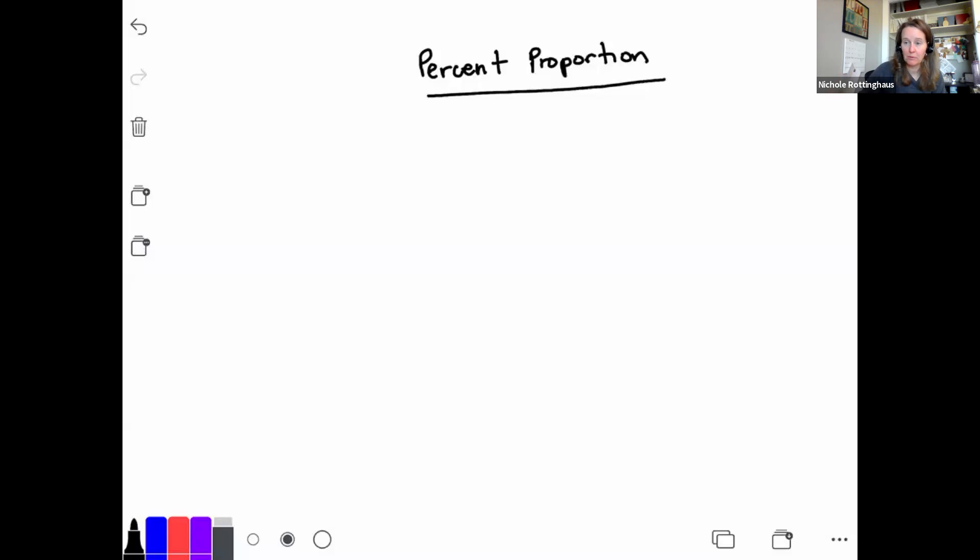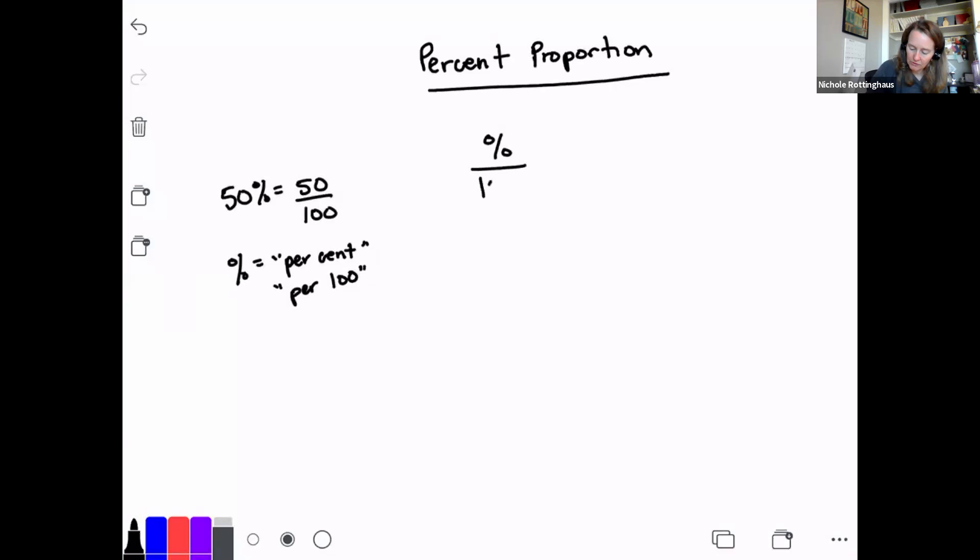Okay. So let's talk about the percent proportion. But before we do that, we need to remember what is a percent. A percent is just a fraction out of 100. And so if I say I have 50%, I have 50 out of 100, right? 50% is 50 out of 100. It's percent is per cent, right? Or per 100. Okay. So a percent is a part per 100. So I could say it's my percent, if I'm given a percent, it's that number over 100.